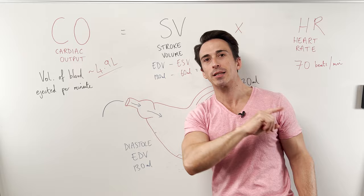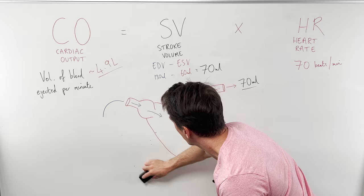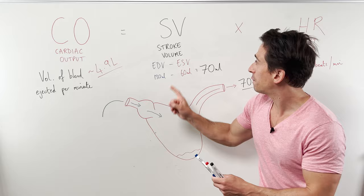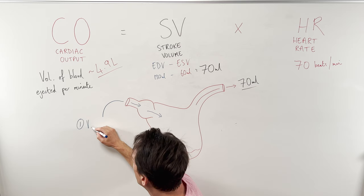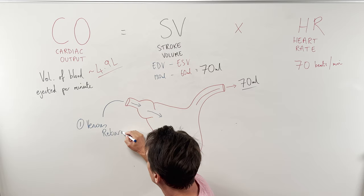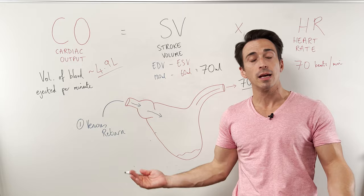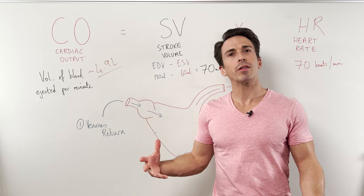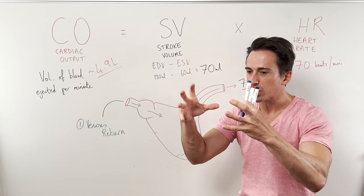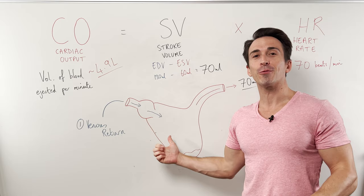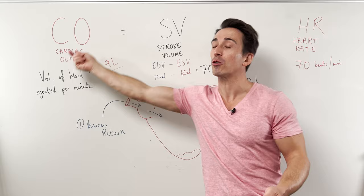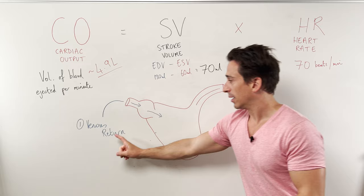The first factor that contributes to stroke volume is venous return — the amount of blood returning back to the heart via the veins. Veins always go back towards the heart. For example, exercise: when you run or contract your muscles, those muscles contract around the veins, squeeze them, and promote blood return to the heart. So exercise increases venous return, increasing stroke volume, increasing cardiac output. This venous return directly correlates with the amount of blood filling the heart.